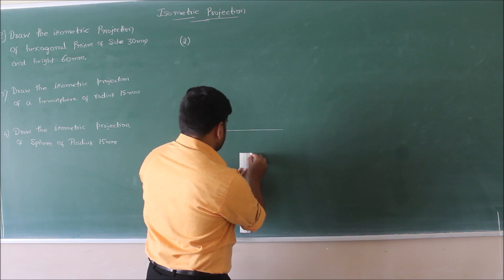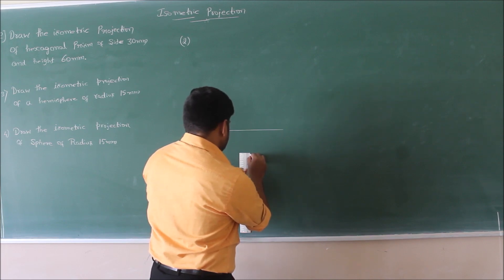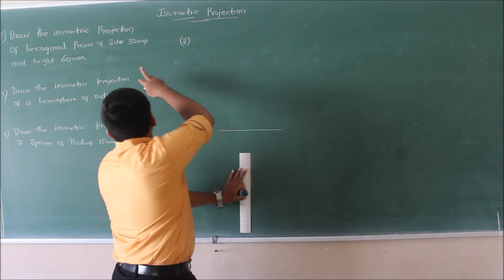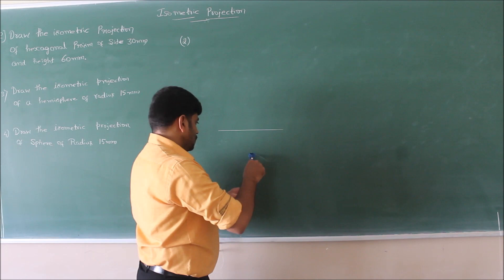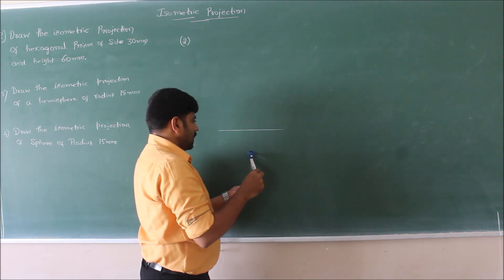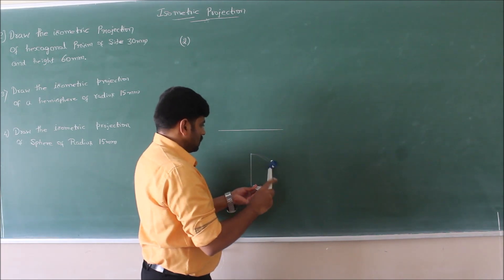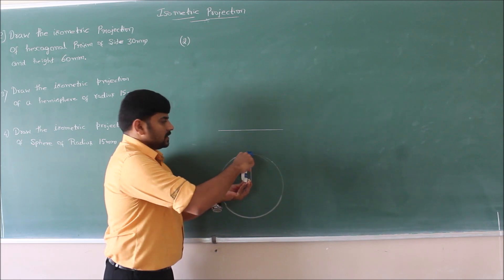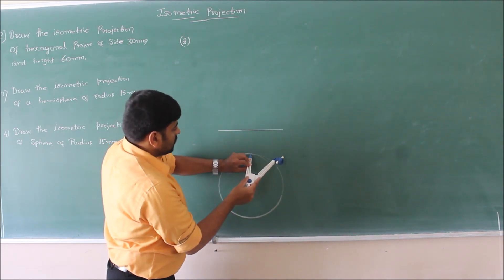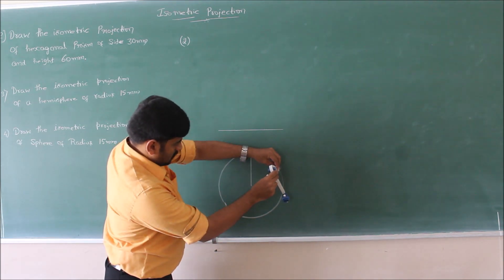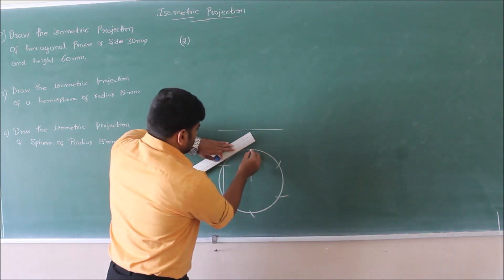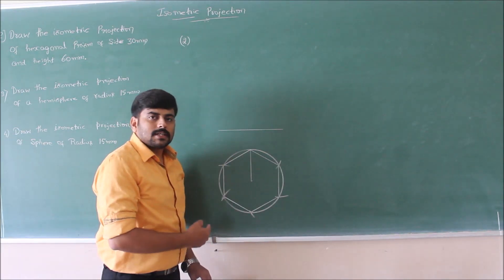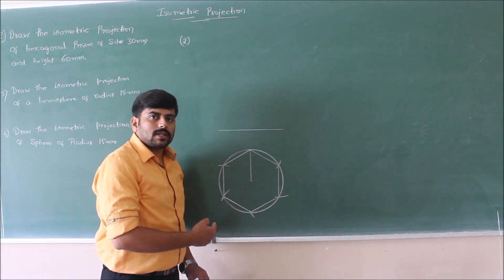To draw the hexagonal top view, draw a vertical line whose length is equal to the side, that is 30 millimeters. Taking this 30 millimeters as radius, measure the same length and draw arcs at equal intervals. Now connect these arcs to get the required hexagon. This completes the top view of the hexagonal prism.